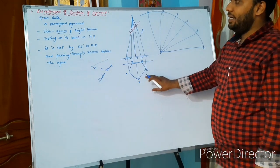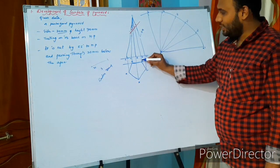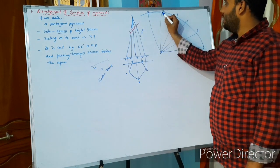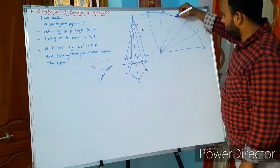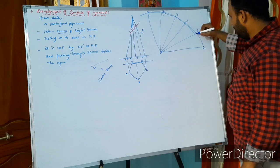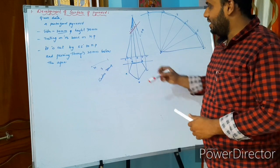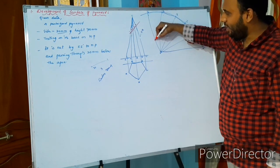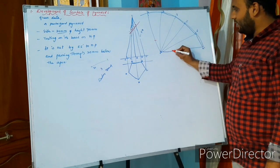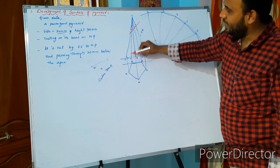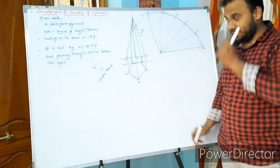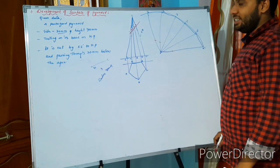Next, measure the radius A dash to 1. A as center, cut an arc. Similarly here, cut an arc. B dash to 2 as radius, B as center, cut an arc. Similarly, D dash to 3 as radius, C as center cut an arc. As it is a hexagonal pyramid, keep your scale here straight, join with each and every point.